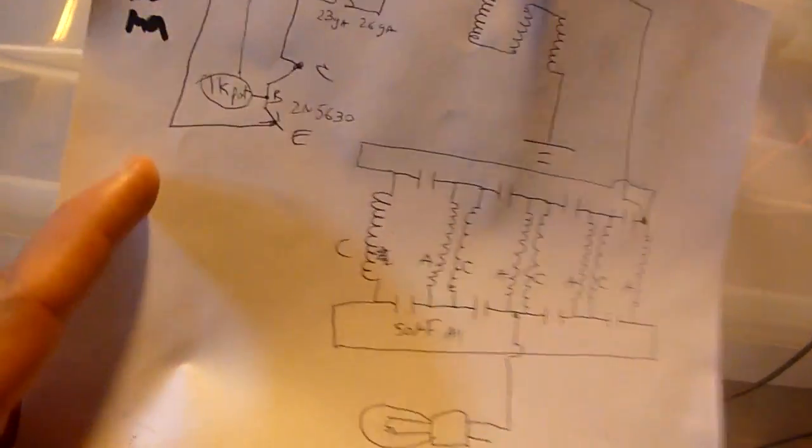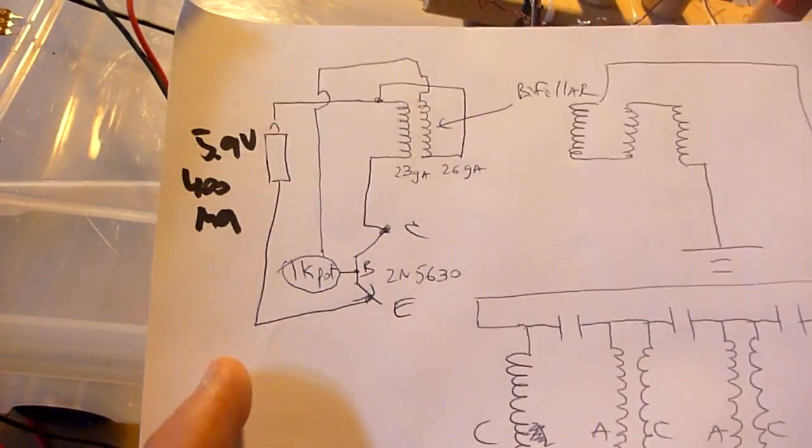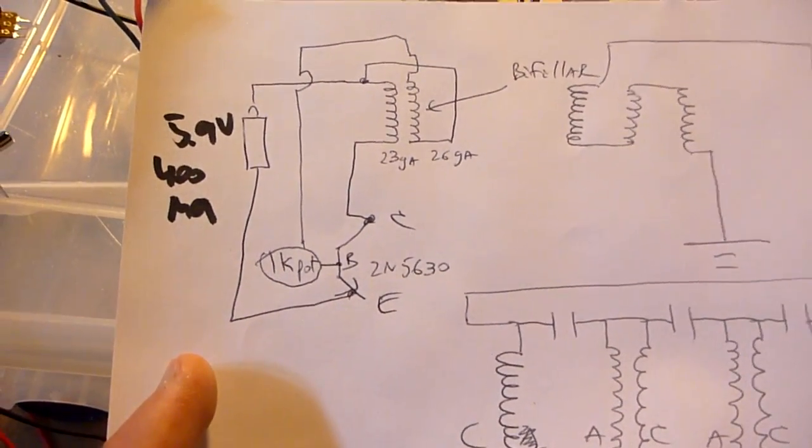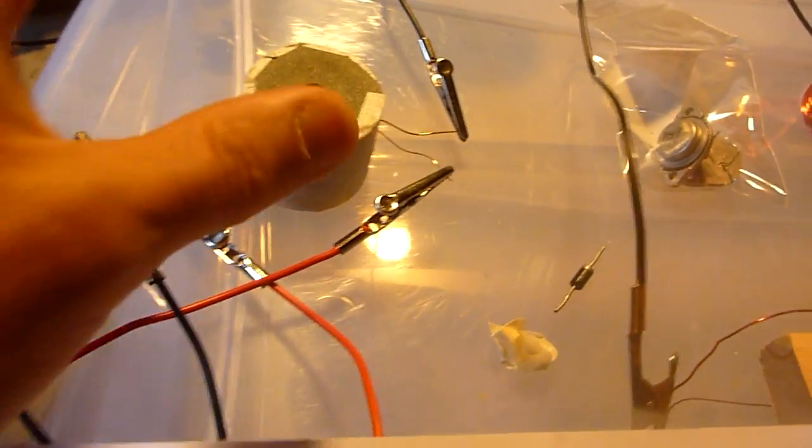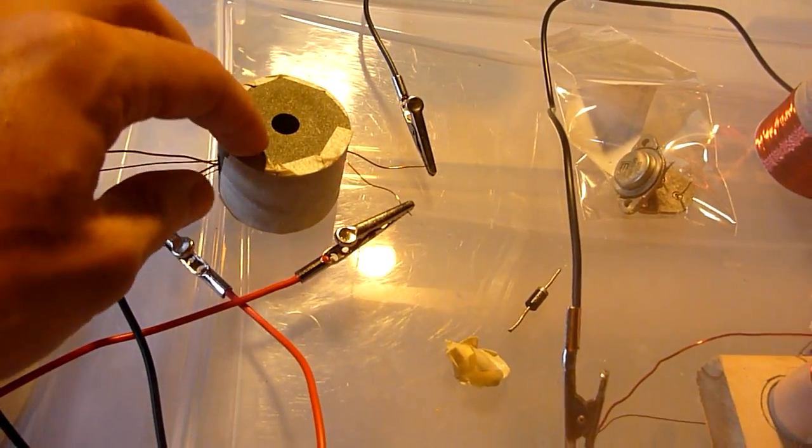So we have the tried and true Jewel Thief circuit with 250-630 transistor, a bi-filler coil wound on this rather large toroid made out of two halves.